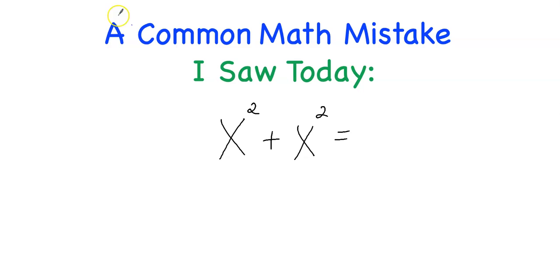Well, I had a lot of students put X to the fourth. And I can see why they put that. I think they were thinking the following: I have a base of X here, so they brought the X over and they added the exponents. And two plus two is four. So they got an answer of X to the power of four.